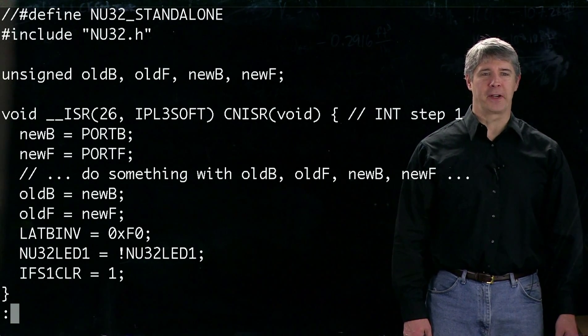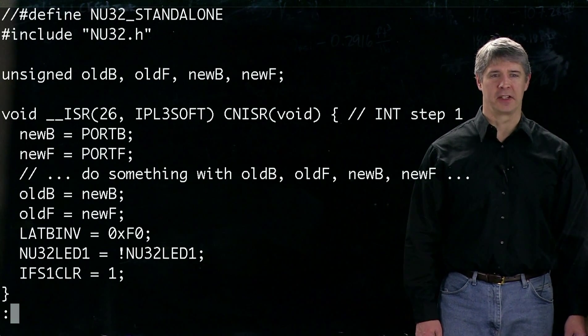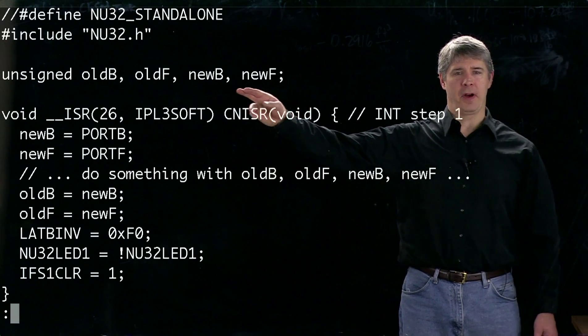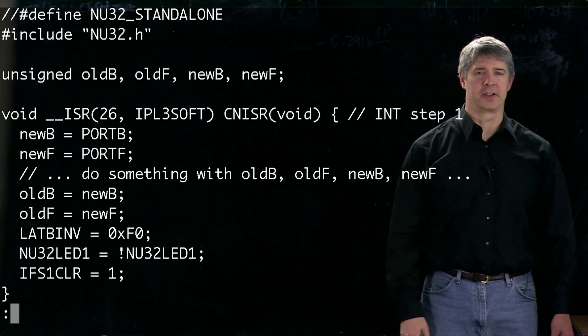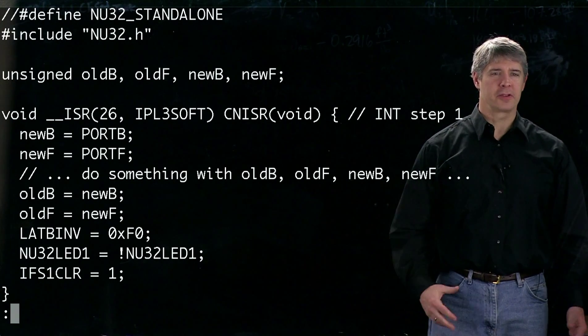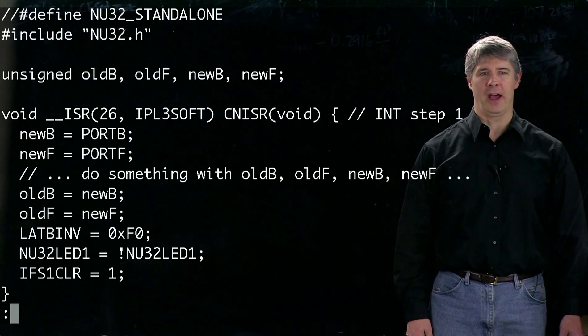This program demonstrates configuring digital I/O ports as well as the use of the change notification interrupt. At the beginning of the program, we define four unsigned integers: oldB, oldF, newB, and newF. Those are going to be used to hold the input values of ports B and port F.